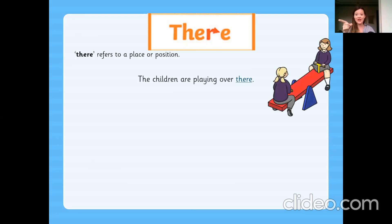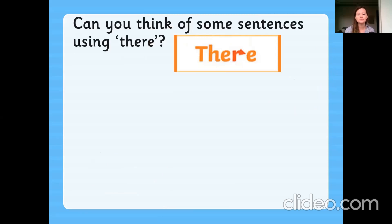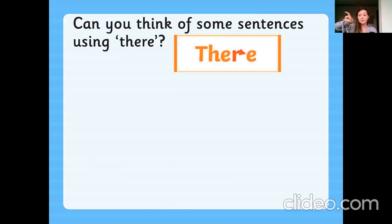So, the children are playing over there. There is an airplane in the sky. Can you think of some of your own sentences using 'there', T-H-E-R-E? We could have: over there is my book; look over there, said Mum; or there is a clown in my classroom. This one shows where something is — a position. You can remember T-H-E-R-E and the arrow represents the R.